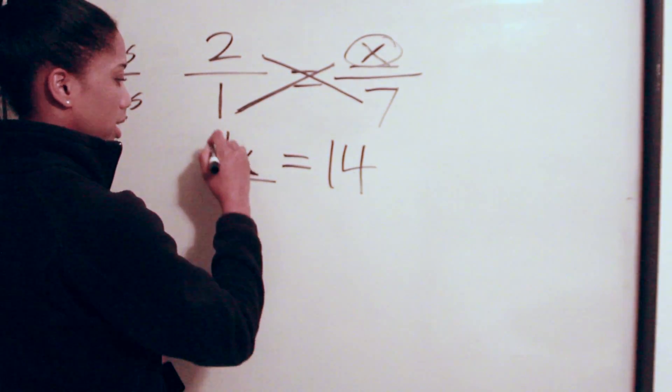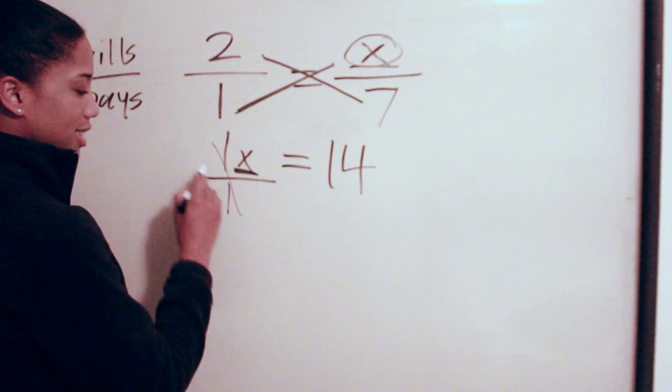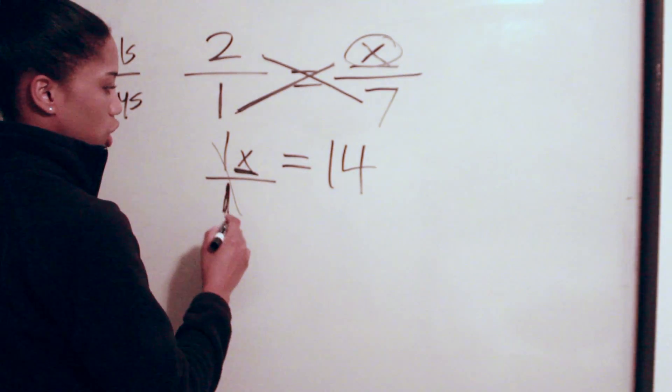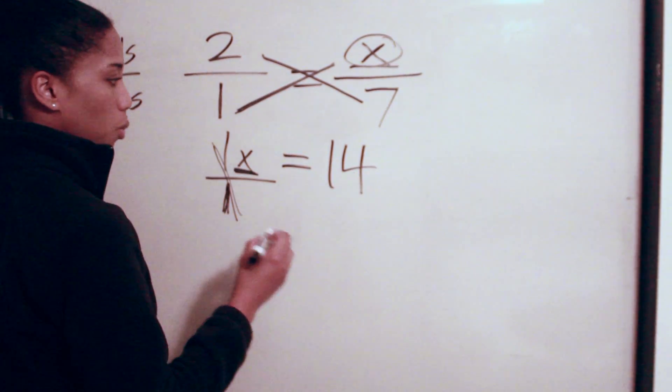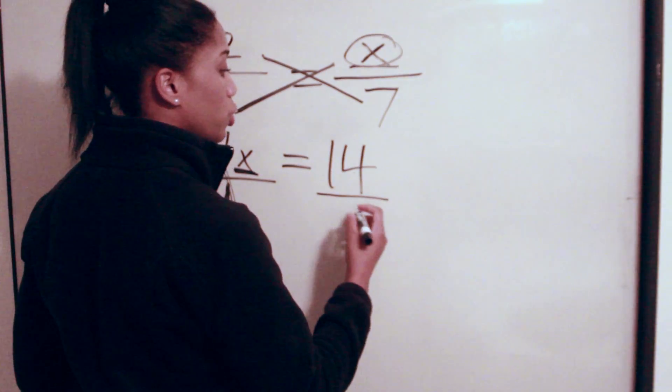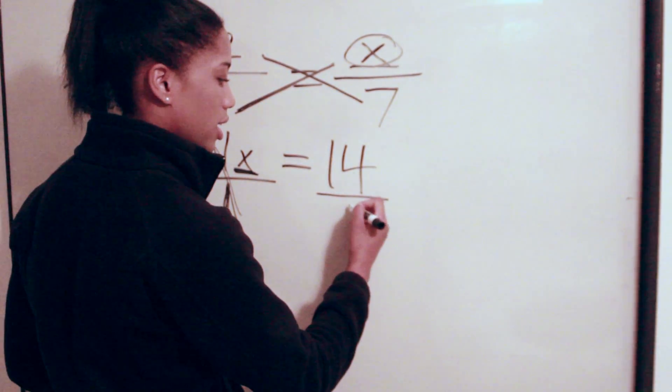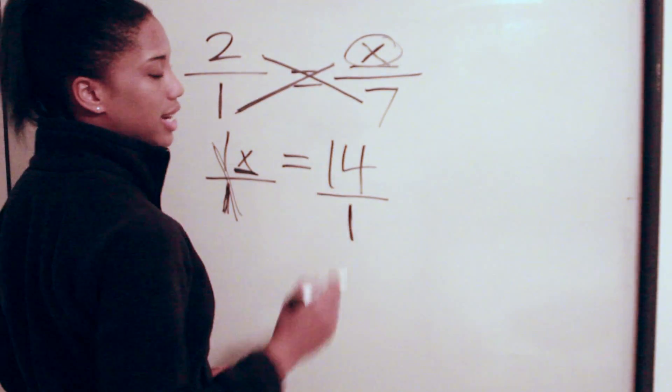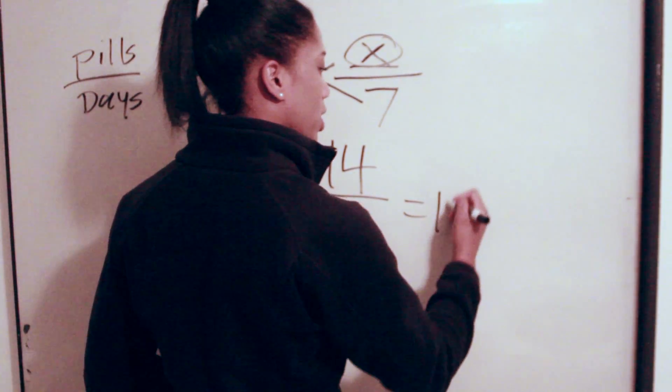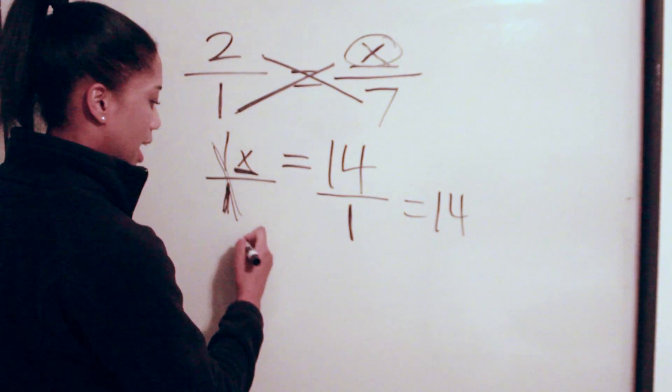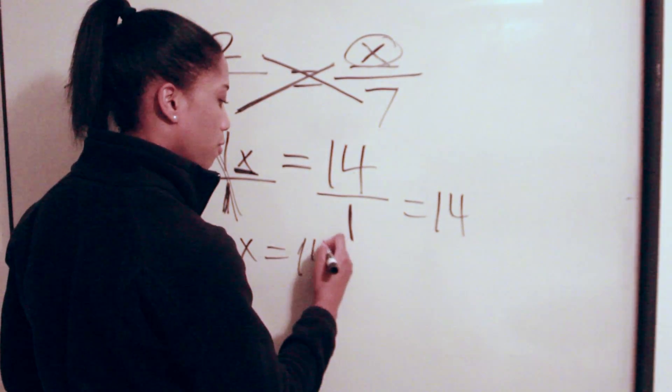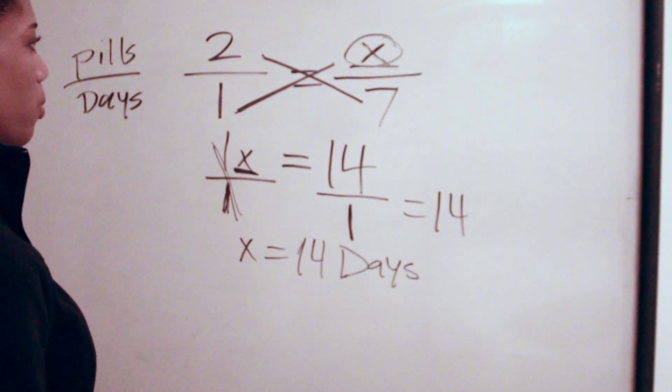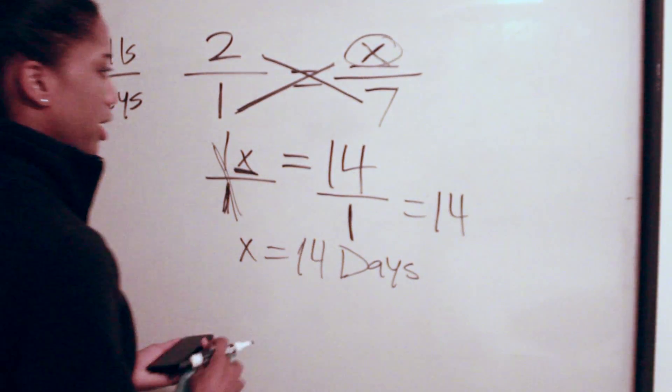Now what you do is isolate your variable. You divide this one, and that's going to cross out. To isolate the variable, you would divide in this case because this is multiplication. You have to do the same thing to the other side of the equal sign, which would be a one here. One divided into 14 will give you 14.